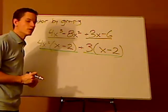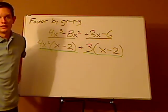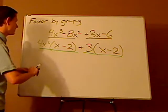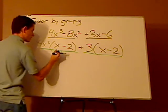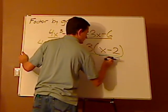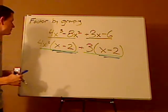And then ask yourself, okay, what does this have in common with this? Because you're going to have to do GCF again. And so you see what they have in common is the x minus 2. Right, the x minus 2 is the same thing here as the same thing here. So then you pull out the x minus 2.